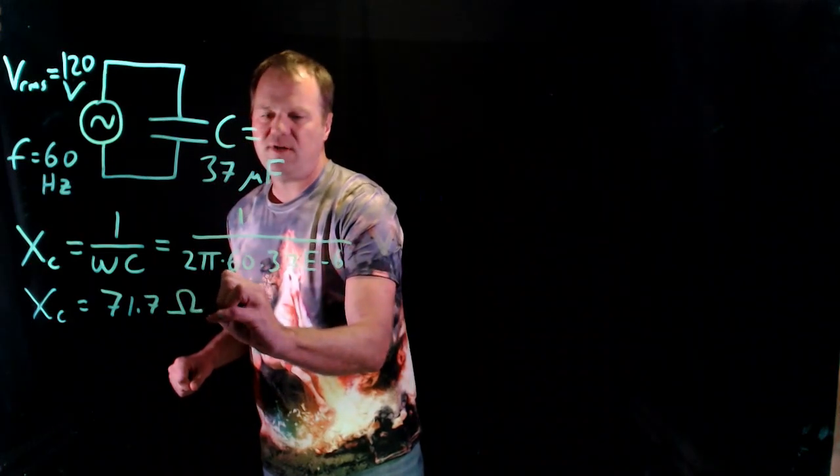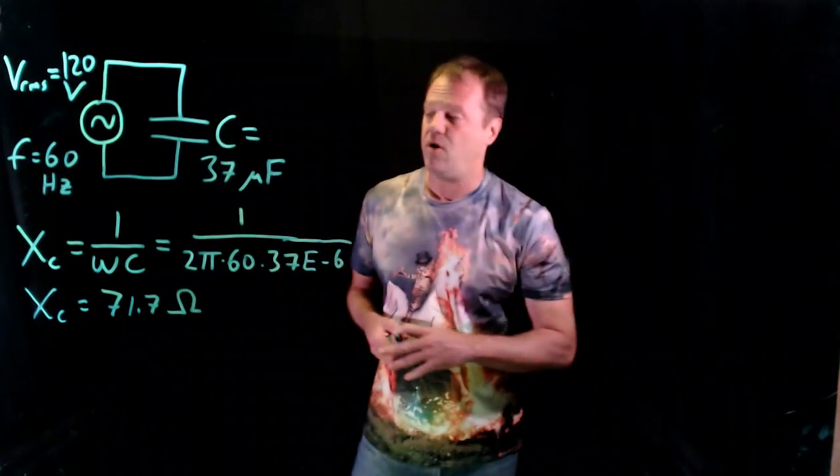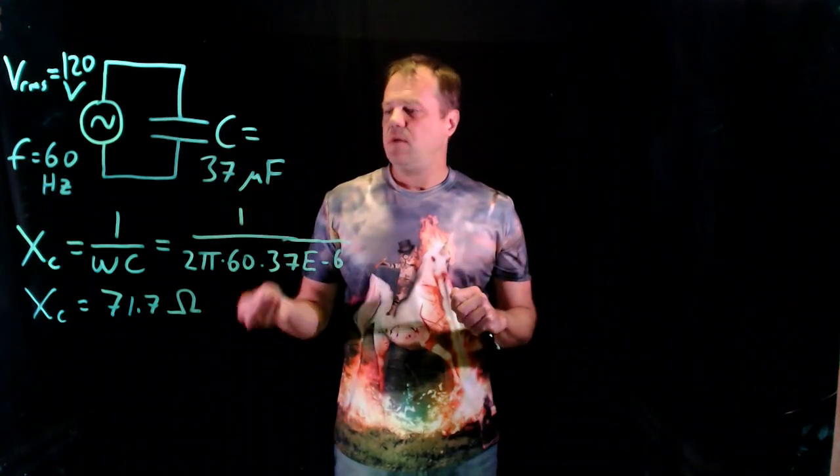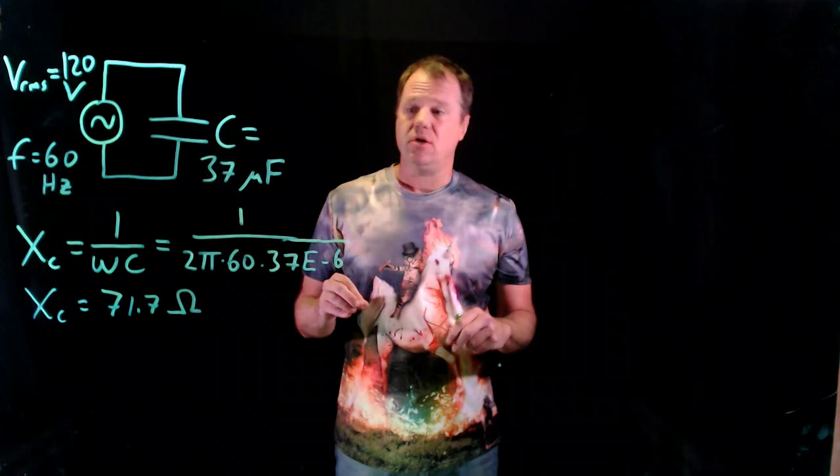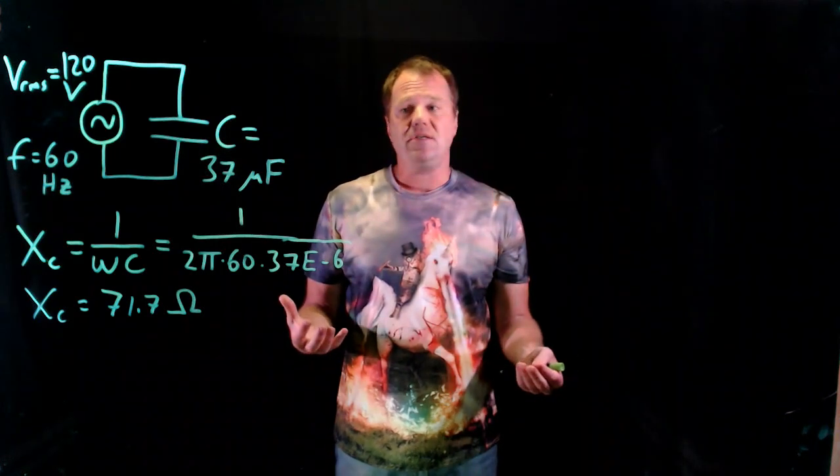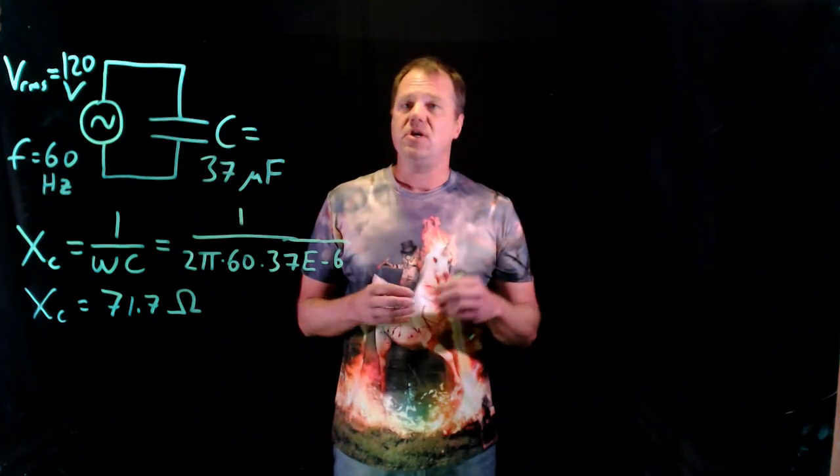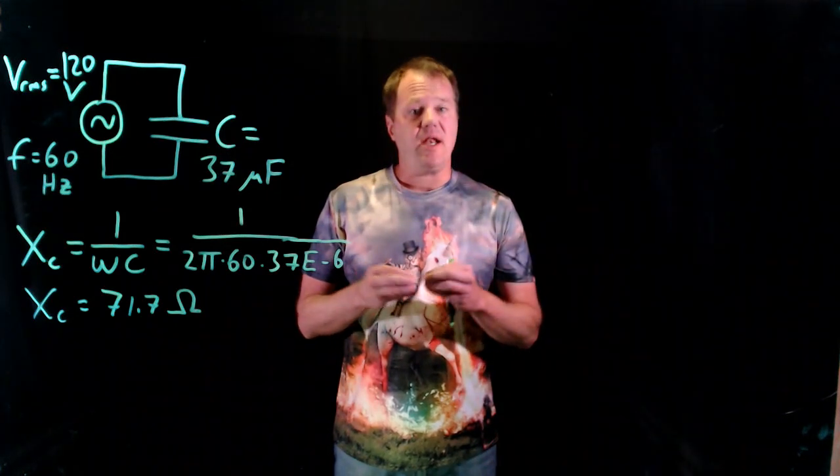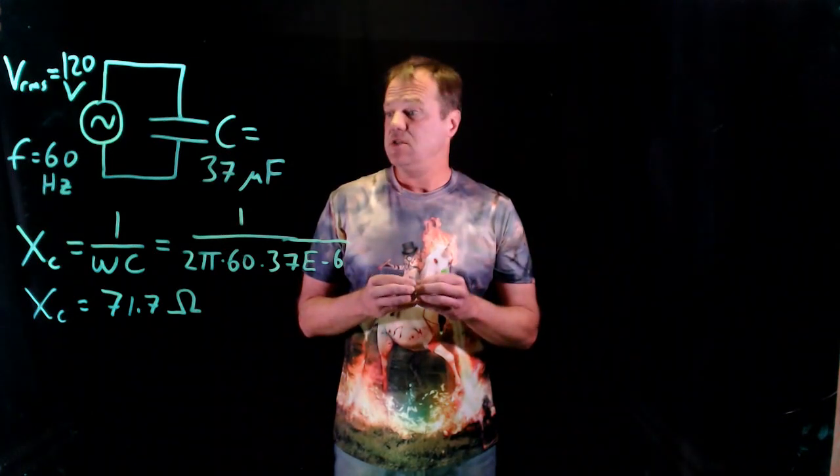Okay, so if you do the dimensional analysis, you do actually end up with ohms. And so that suggests that we can treat the capacitor sort of like a resistor. And that's what's kind of cool about AC circuits is that capacitors and inductors act sort of like resistors. And the analysis is actually fairly simple.